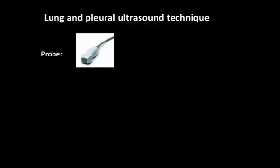So the lung and pleural ultrasound technique is what we'll now discuss. Firstly, you need to know which probe to pick up, and in most instances for critical care ultrasound, we advise the use of the phased array or cardiac probe for its small footprint and ease of use and ability to be applied anywhere in the body without having to switch probes multiple times for the same patient.